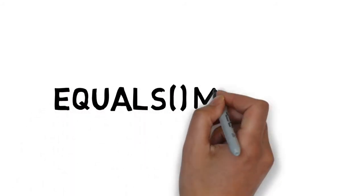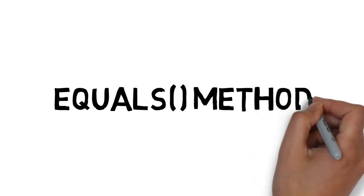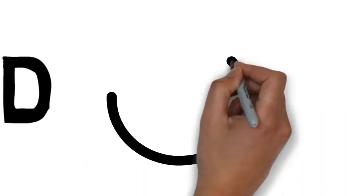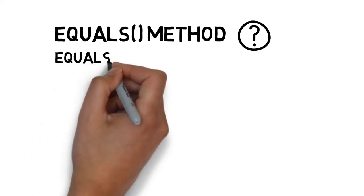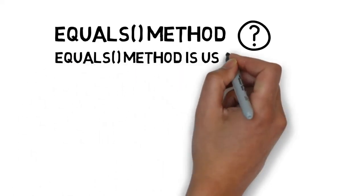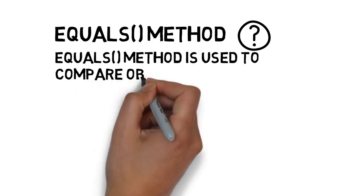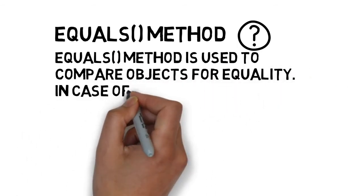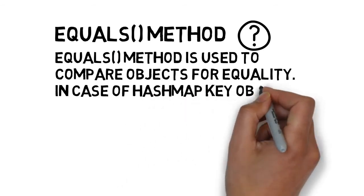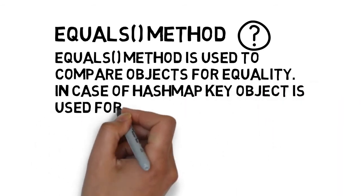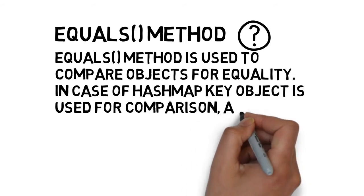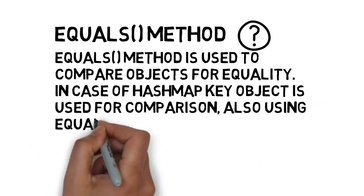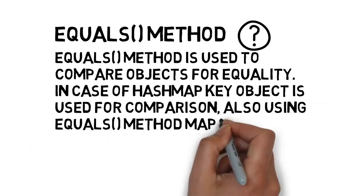Understanding the equals method. Equals method is used to compare objects for equality. In case of hash map, key object is used for comparison, also using equals method. The map knows how to handle hashing collision.